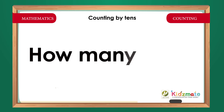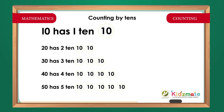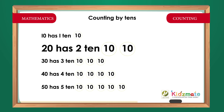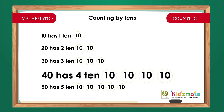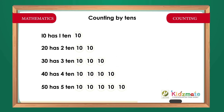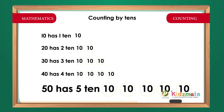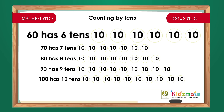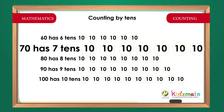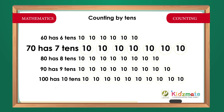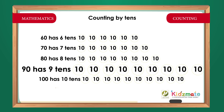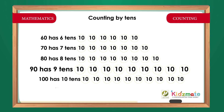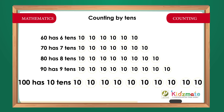How many Tens? 10 has one Ten. 20 has two Tens. 30 has three Tens. 40 has four Tens. 50 has five Tens. 60 has six Tens. 70 has seven Tens. 80 has eight Tens. 90 has nine Tens. 100 has ten Tens.